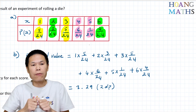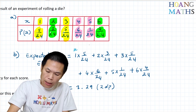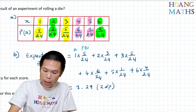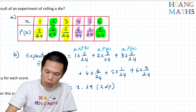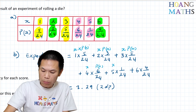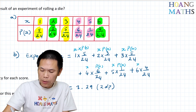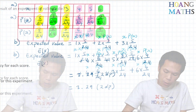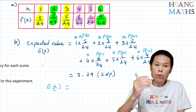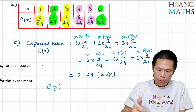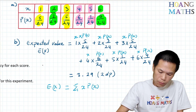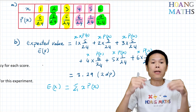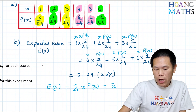So the result is 3.29, correct to 2 decimal places. So the expected value is 3.29. To summarize: we take the score, multiply it by its probability, and add all of them together. That is the sum of the score times its probability. The expected value is also known as the mean — the average.